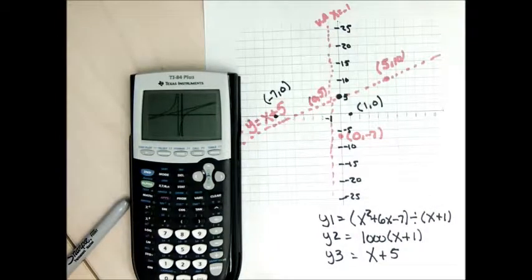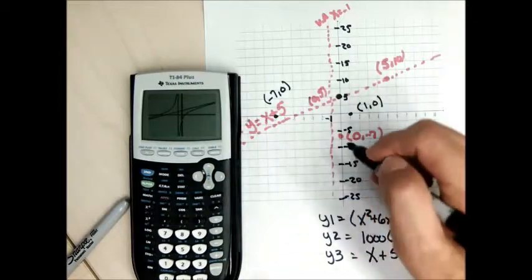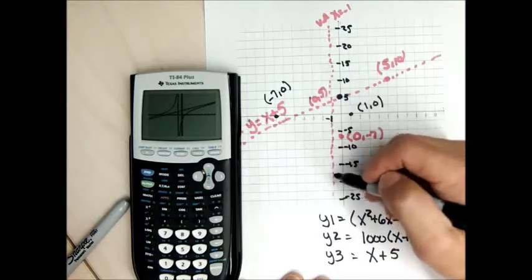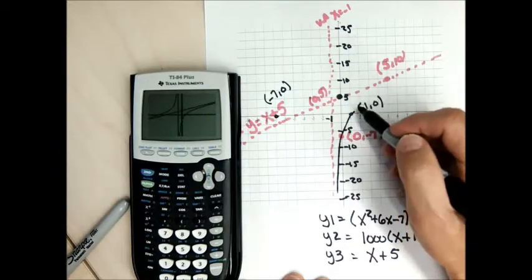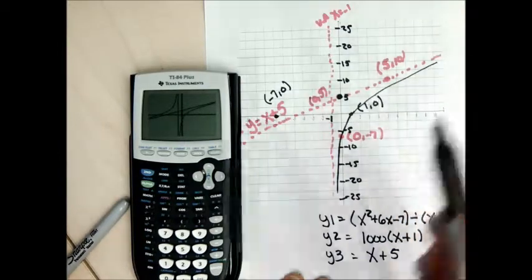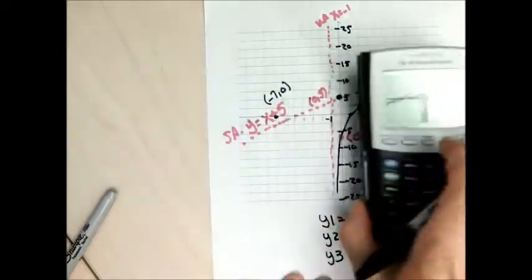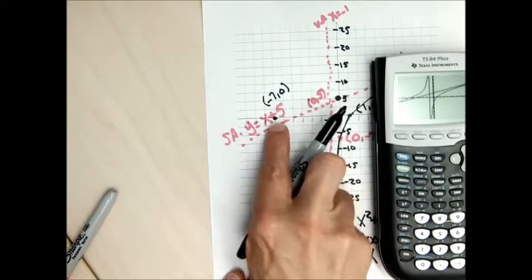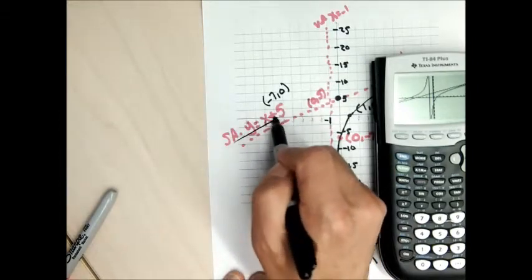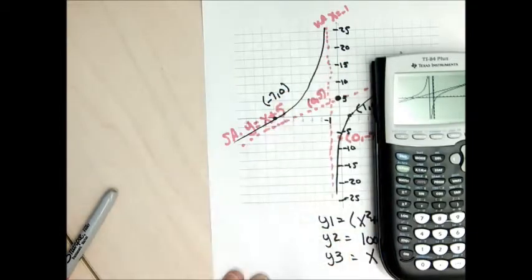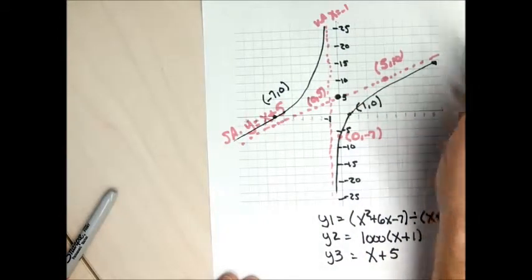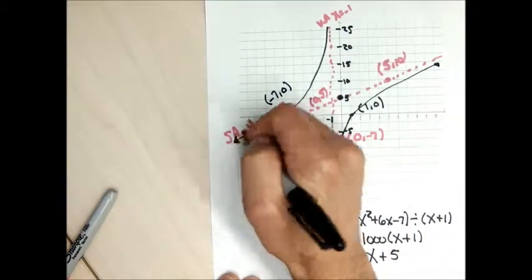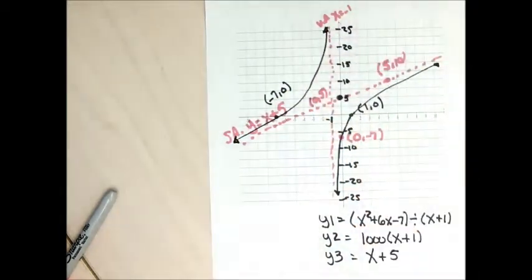Specifically, I make my graph go through the intercepts and follow the asymptotes. On the right-hand side, the graph gets close to the vertical asymptote, passes through the y-intercept, passes through the x-intercept at (1, 0), then gets close to the slant asymptote. On the other side, the graph passes through the x-intercept at (negative 7, 0), gets close to the slant asymptote, has a little bend, then gets close to the vertical asymptote. I add arrows at the ends of the graph to make it feel more complete.